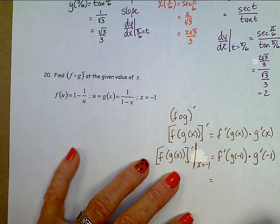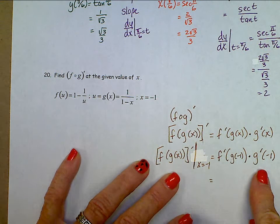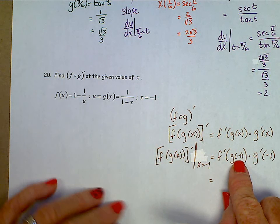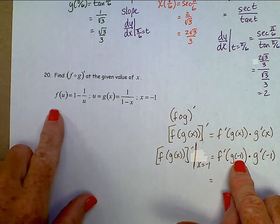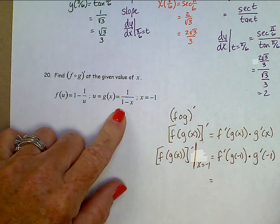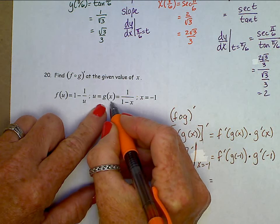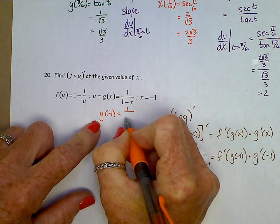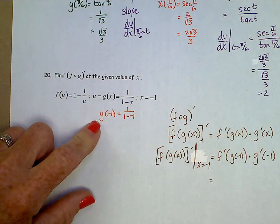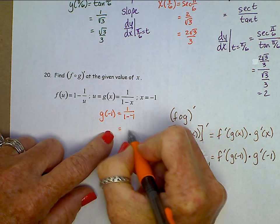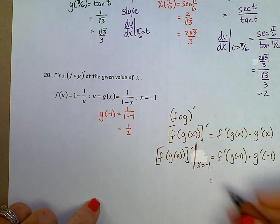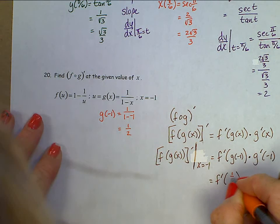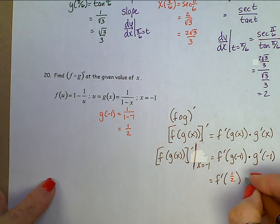Now you've done these before with a table. We don't have a table anymore. We have the actual functions now. So we can come right back over here and figure out what g of negative 1 is. g of negative 1 is 1 over 1 minus a negative 1, and that's going to be a half. So we have f prime of a half times g prime of negative 1.